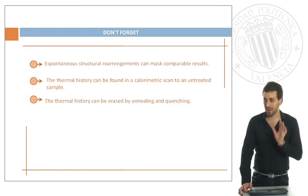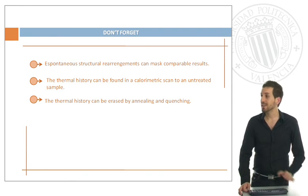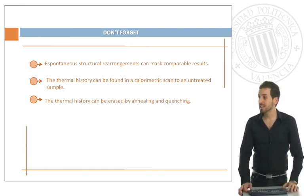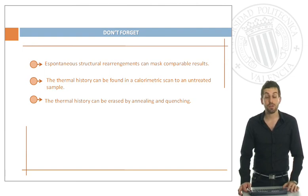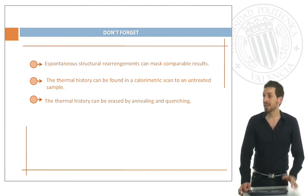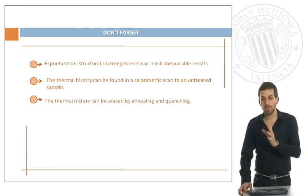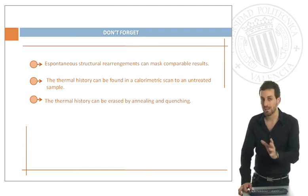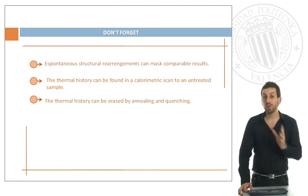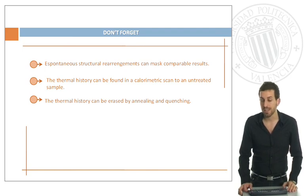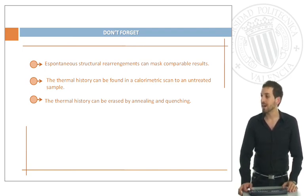Remember what we have seen: spontaneous structural rearrangements can mask comparable results. The thermal history can be found and controlled in a calorimetric scan compared to an untreated sample, and then we have to know if we are really interested in this thermal history or not. If we are not interested in this thermal history, it can be erased by annealing or quenching.